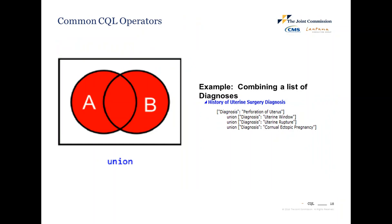One of the most common questions is: what does union mean? Union is a CQL operator that combines two or more lists together, so any element in list A or list B will satisfy the condition. We've related union to meaning 'or' because anything from A or B will meet the criteria. For example, the logic looks for a diagnosis code of either preparation of uterus, uterine window, uterine rupture, or ectopic pregnancy — union combines all those diagnosis codes into one list.